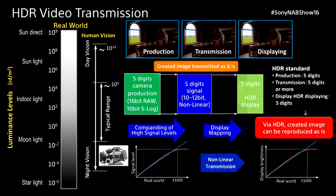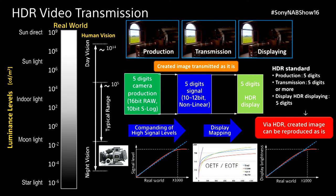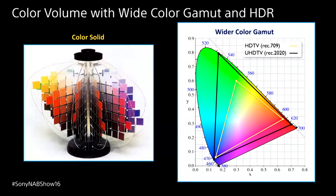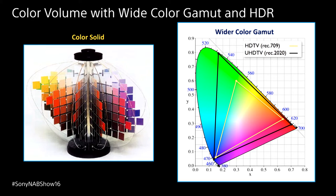To do that, what we need are new display and acquisition curves — optical to electrical transfer functions in content creation, and electrical to optical transfer functions in the display at home. That's one aspect — the dynamic range in luminance.